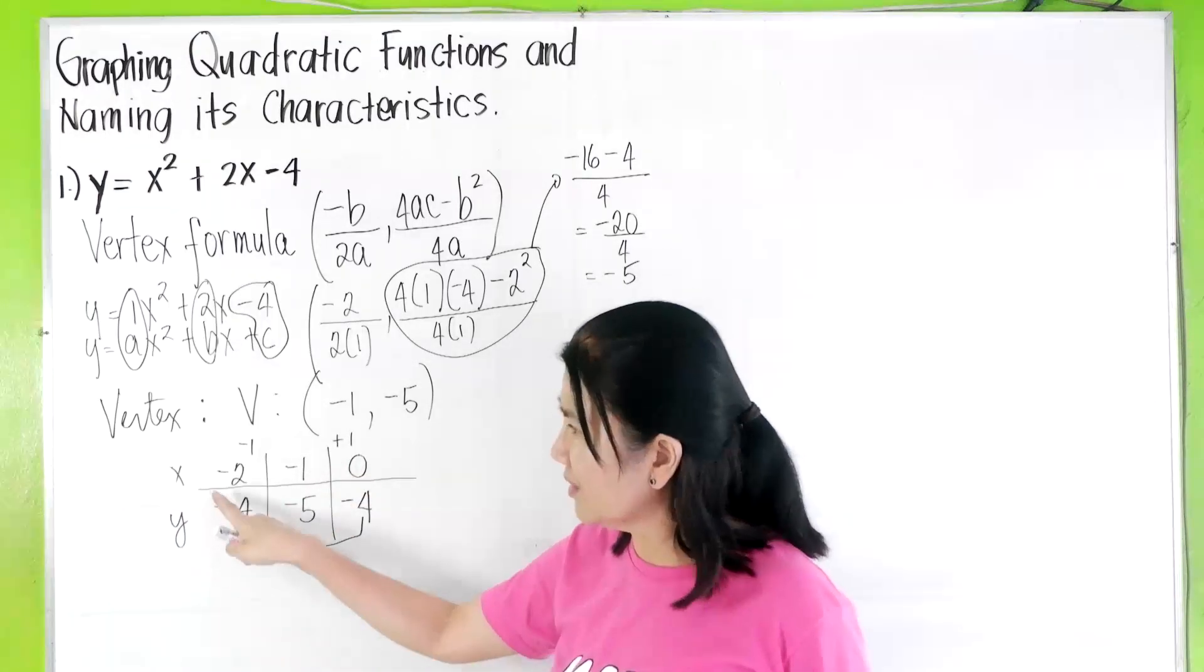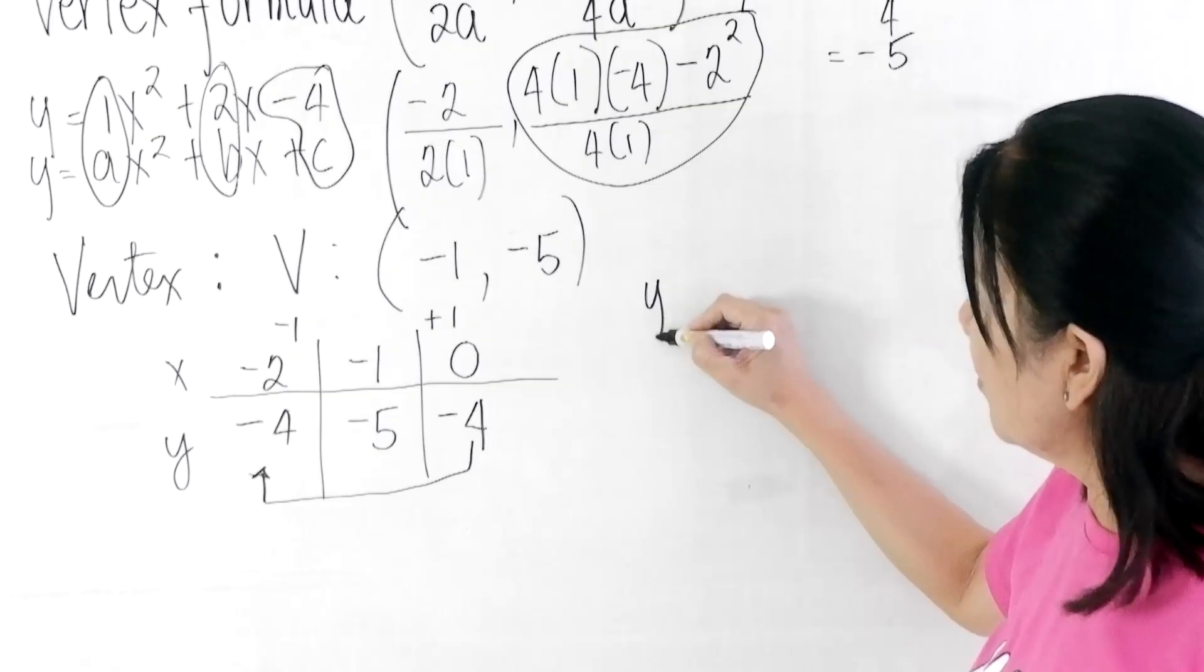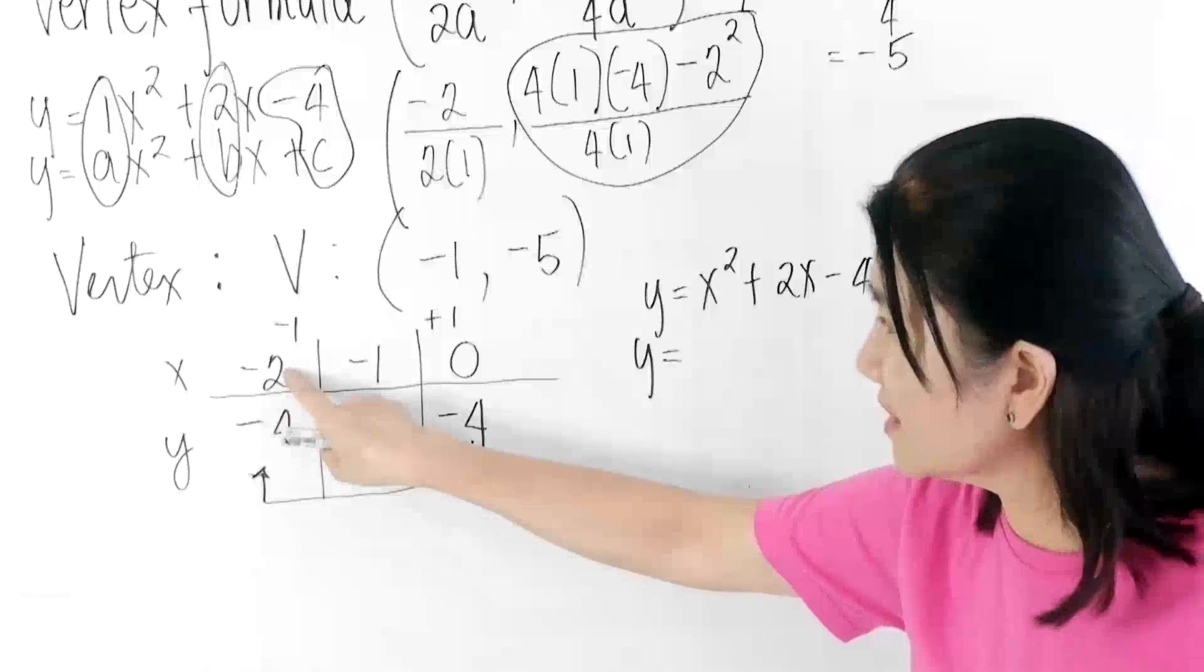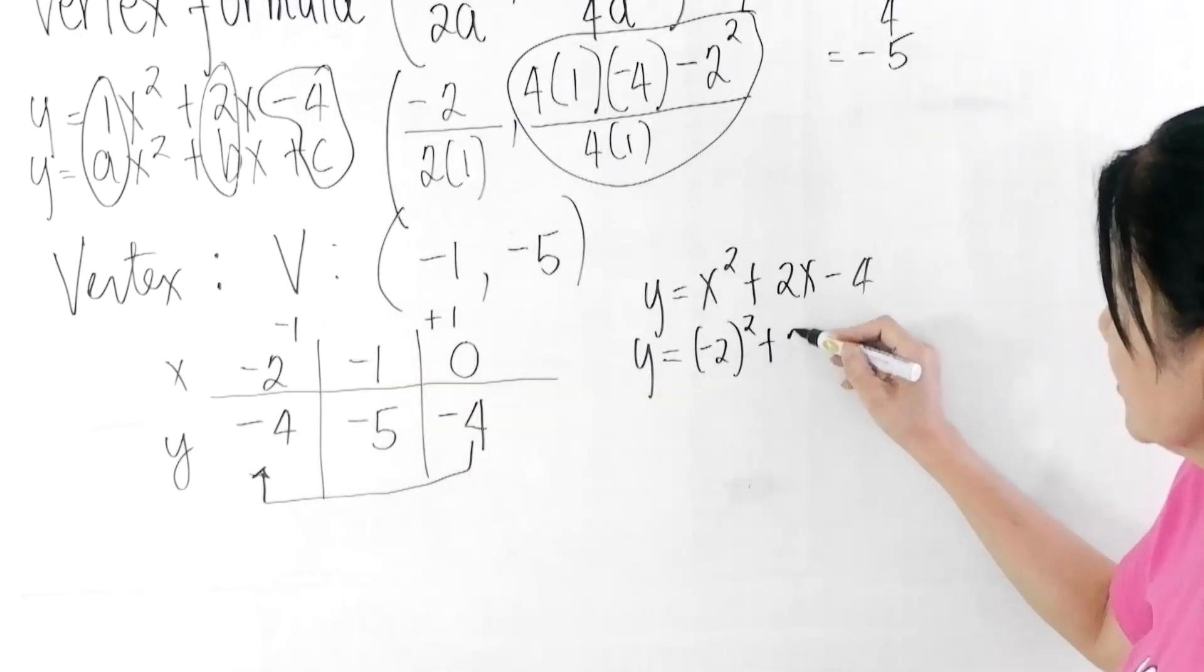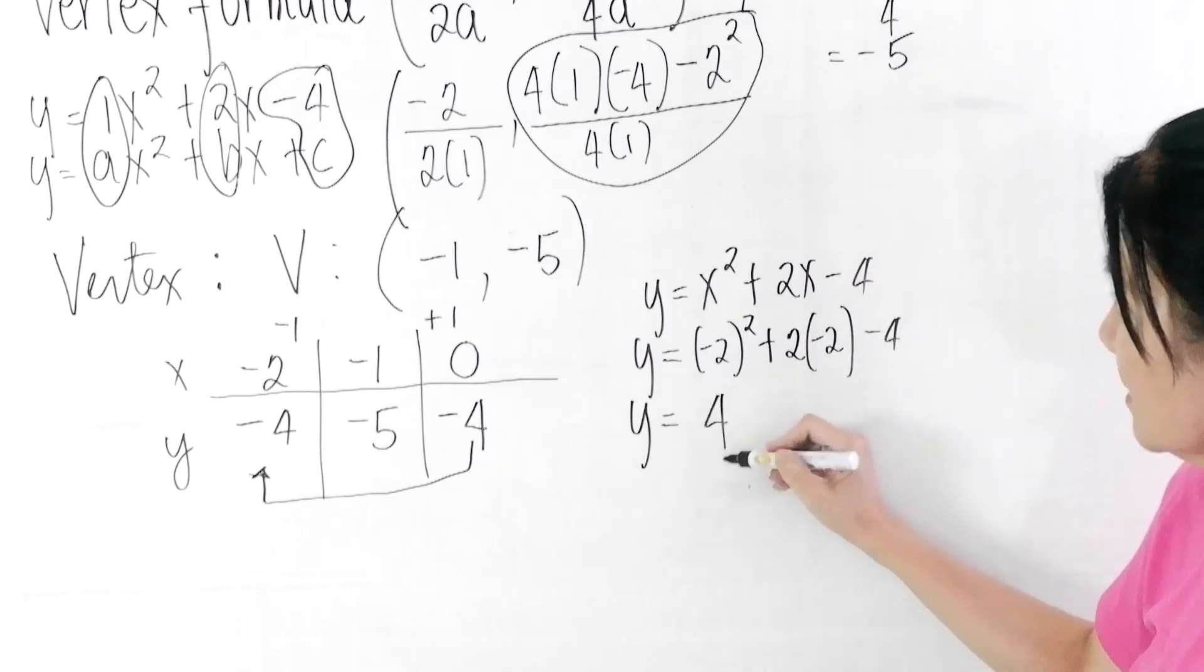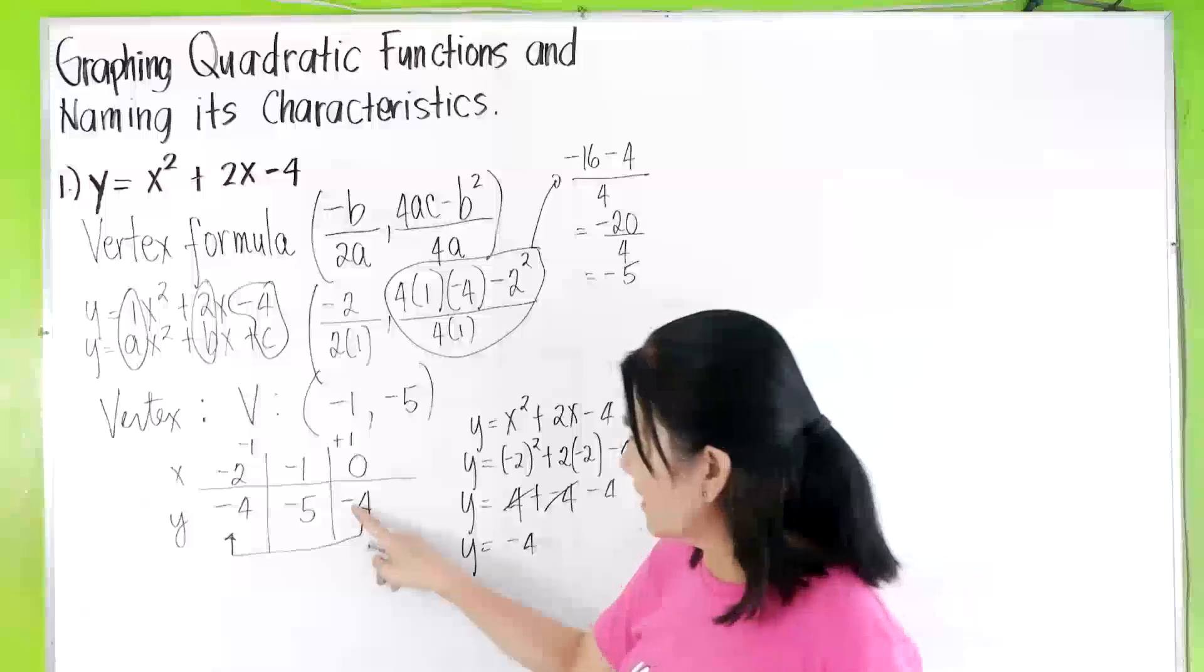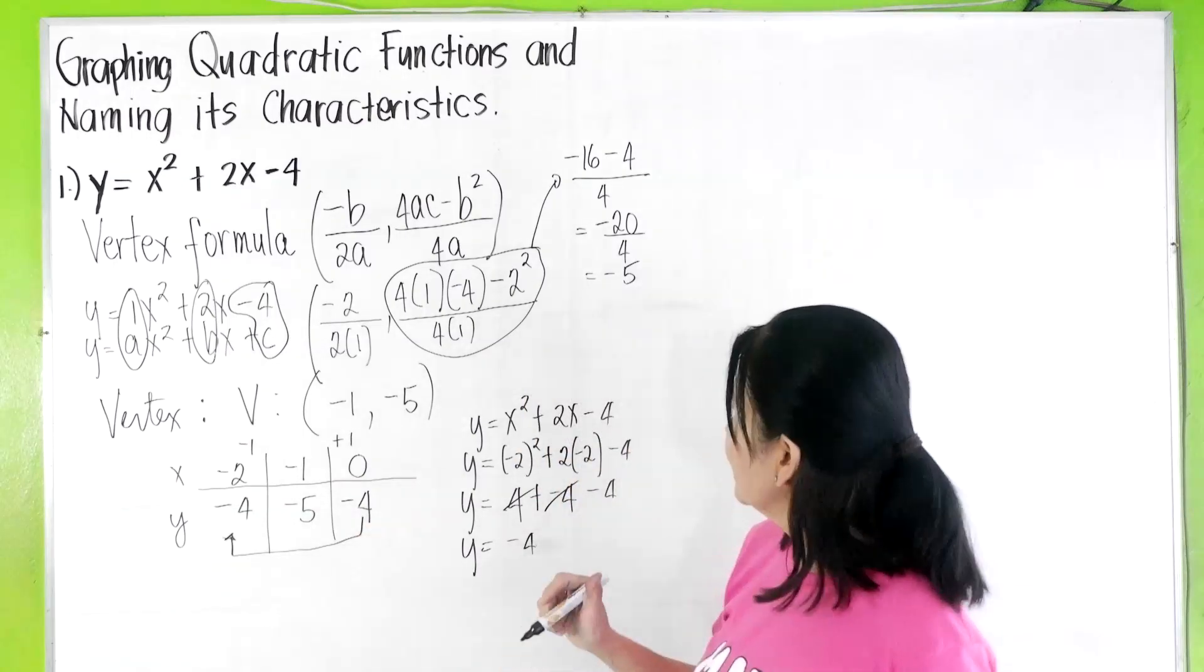For example, you're not comfortable about that. Then, you can try and substitute. Let's try it here. y = x² + 2x - 4. What is y when x is -2? So, (-2)² + 2(-2) - 4. We get positive 4 + (-4) - 4. This is 0. So, y is -4. So, as you have seen here, these two values are really the same.